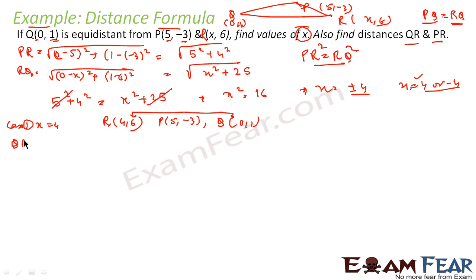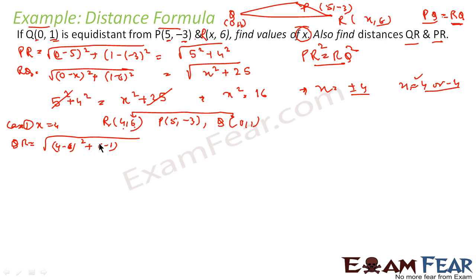QR equals root of (4-0)² + (6-1)², which is root of 4² + 5², giving root of 16 + 25, which is root of 41. So QR = √41 in Case 1.